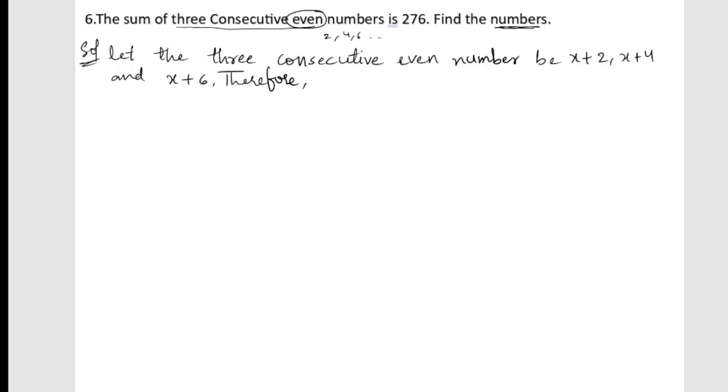According to the problem, or according to the given condition, we need to add these numbers. So x+2 plus x+4 plus x+6 equals 276. These are the three numbers, and their sum is 276.